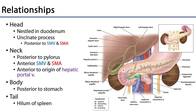The neck of the pancreas is a really important and anatomically complex part in terms of its relations. It is immediately posterior to the pyloric part of the stomach. It's anterior to the superior mesenteric vessels and also anterior to a very important origin — that of the hepatic portal vein. The superior mesenteric vein meets with the splenic vein to form the hepatic portal vein just posterior to the neck of the pancreas.